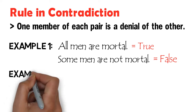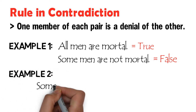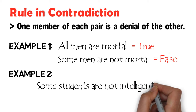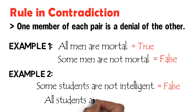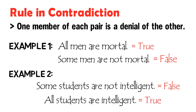If we assume that 'some students are not intelligent' is false, then its contradictory, 'all students are intelligent,' is absolutely true. The first proposition says that there is not at least one student that is not intelligent; hence we can logically conclude that all students are intelligent.